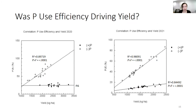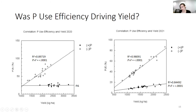Was phosphorus use efficiency driving yield? It depends. In 2020 dry conditions within the non-manure treatment, there was a positive significant correlation between yield and phosphorus use efficiency. However, when manure was added, there was no significant correlation between yield and phosphorus use efficiency. In 2021 under drought conditions, there was a positive significant relationship between phosphorus use efficiency and yield, and also a positive correlation in the manure treatment. My guess is that because phosphorus wasn't able to be taken up as well as in 2020, these lines were acting as if there was no manure added — a combination of poor mineralization and poor performance.